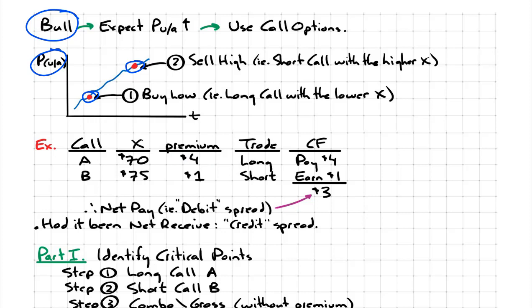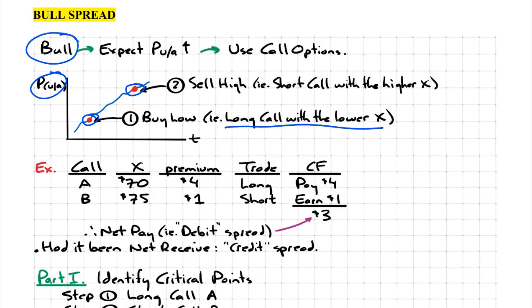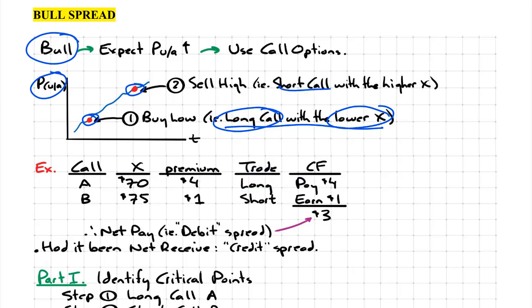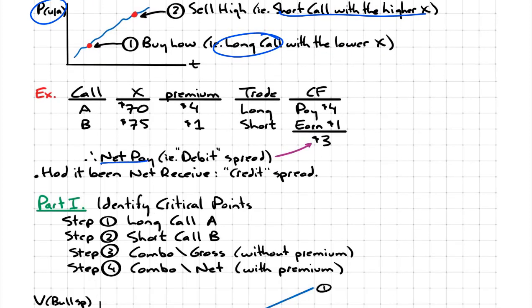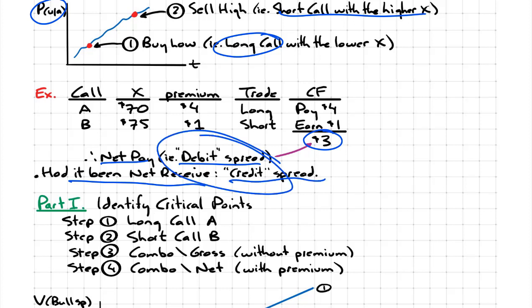The question is which option should the investor be buying and which one should he be selling? We've set the blueprint with our visual framework. He's going to long the call with the lower strike and pay the premium. On the other hand, he will be shorting the call with the higher strike and earn $1 premium. So the combined bull spread net premium means he ends up paying $3. Because he's paying, this is referred to as a debit spread. If he was receiving it, it would be referred to as a credit spread — just some terminology for your vocabulary.